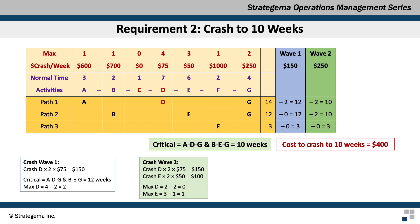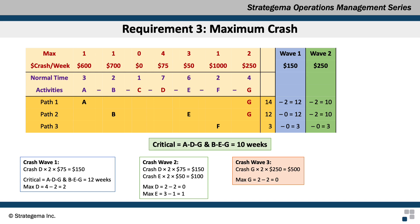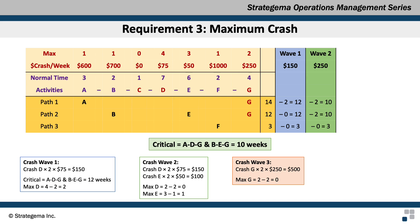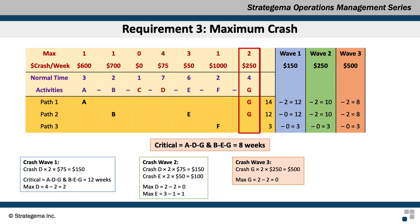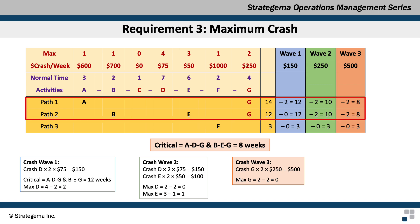Our last requirement is to crash the project as far as we can go, so we continue with the next wave. We still focus on the two critical paths and find activities common to both or crash activities on each. Activities C and D are now red and removed — D can no longer be crashed. The next least expensive activity is E, but it isn't on both paths, so we leave it for now. Activity G at $250 per week is common to both paths, so we crash it by its maximum of 2 weeks for a total cost of $500. This reduces both paths 1 and 2 to 8 weeks, and G can no longer be crashed.